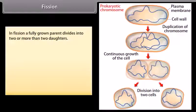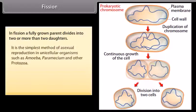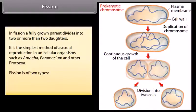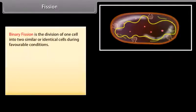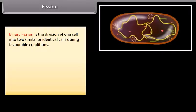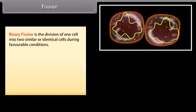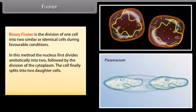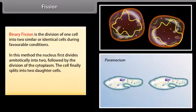In fission, a fully grown parent divides into two or more than two daughters. It is the simplest method of asexual reproduction in unicellular organisms such as amoeba, paramecium, and other protozoa. Fission is of two types: binary fission and multiple fission. Binary fission is the division of one cell into two similar or identical cells during favorable conditions. In this method, the nucleus first divides amitotically into two, followed by the division of the cytoplasm. The cell finally splits into two daughter cells.